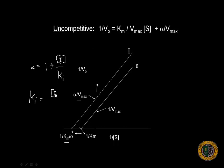So we can determine Ki if we know alpha and inhibitor concentration. And so this is the nature of uncompetitive inhibition. Both Vmax and Km decrease.